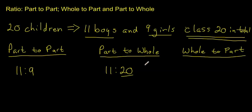We can also write a ratio as a whole-to-part, so if we wanted to, we could be comparing the entire class of 20 children to, say, maybe the girls. So we would say 20 to 9. So you can see that we're taking the whole, which is the 20 again, and the part, which in this case is the girls.